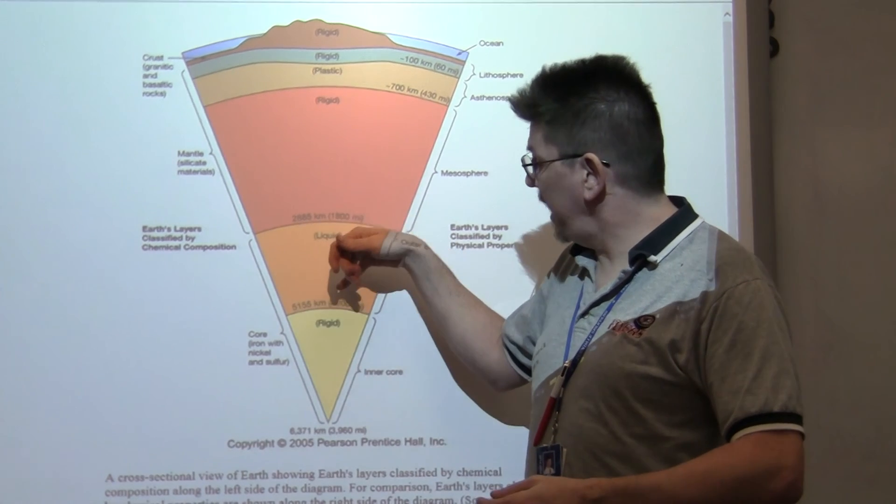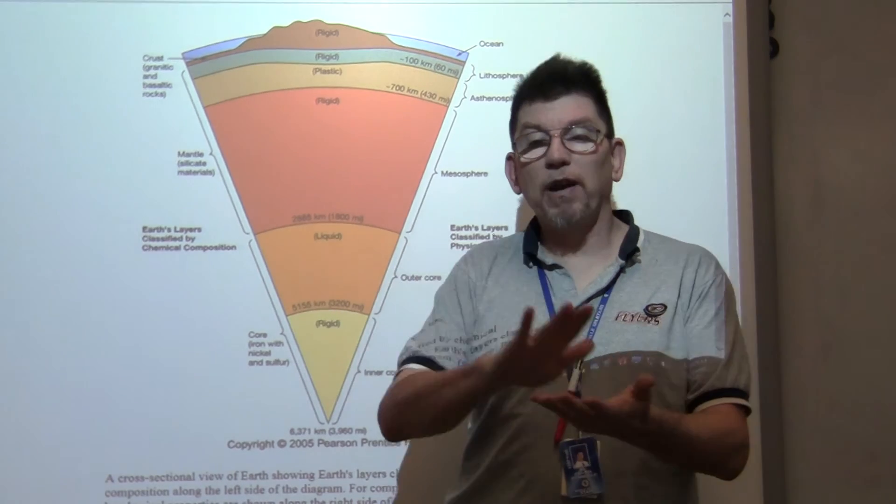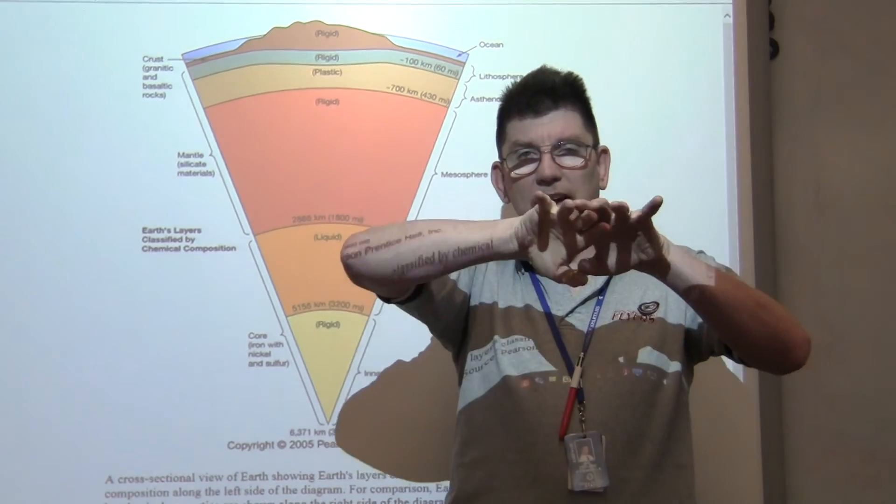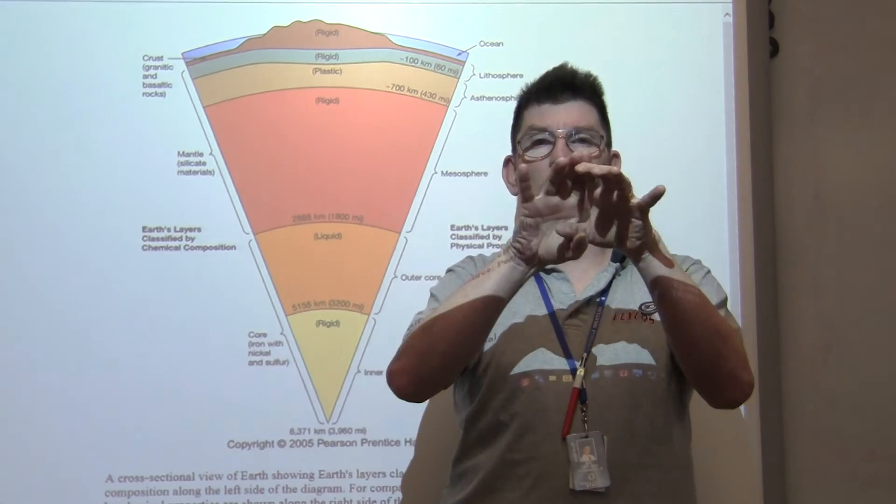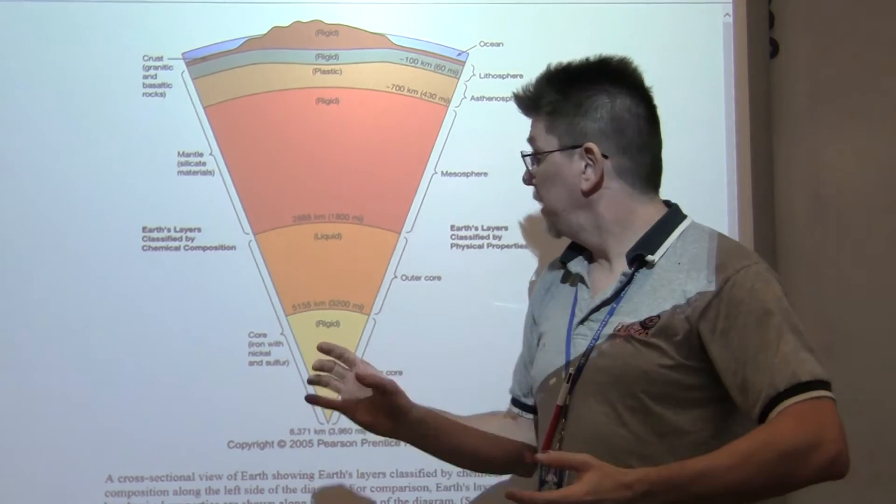As we go down even further, pressure wins out again and at the center, squeezes it into a tight iron ball at the center of the planet.